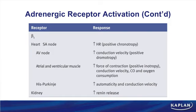Beta-1 receptors are found throughout the heart — on the SA and AV nodes, atrial and ventricular muscle, and the His-Purkinje fibers. Stimulating beta-1s produces: a positive chronotropic effect (increased heart rate), a positive dromotropic effect (increased conduction velocity), and a positive inotropic effect (increased force of contraction). A beta blocker would do the opposite — negative chronotropic, dromotropic, and inotropic effects.